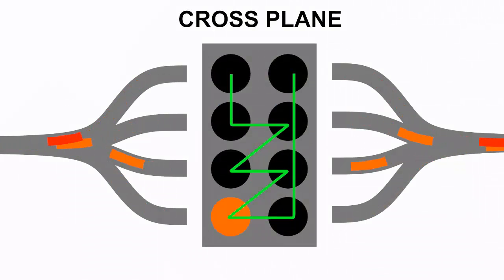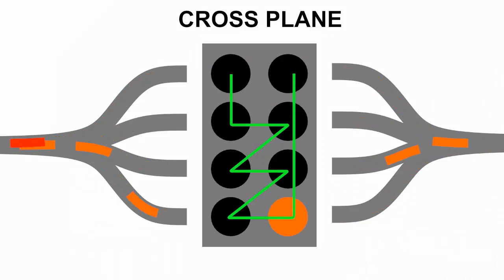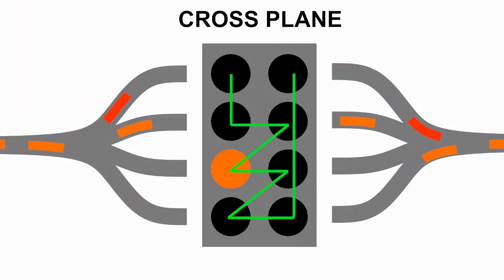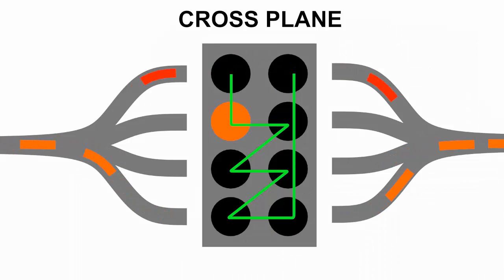Looking at the cross plane crank engine, however, you can see that some pulses, shown in red, intersect with other pulses, shown in orange. This has a negative effect on the scavenging and generally makes it more difficult for the engine to breathe, particularly at high RPM.